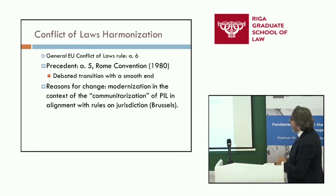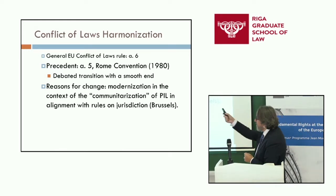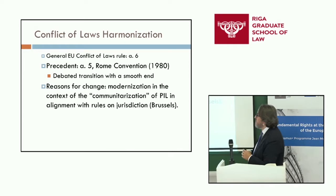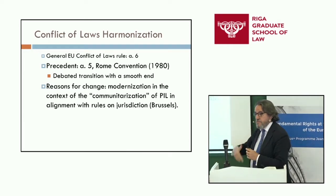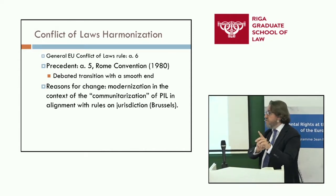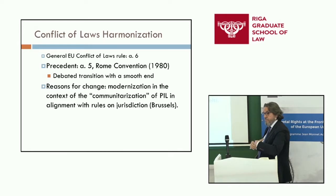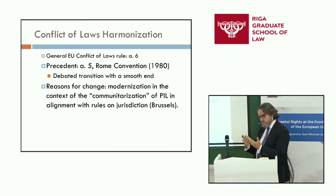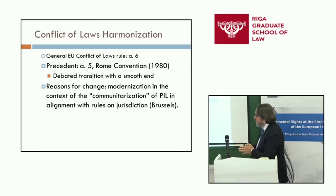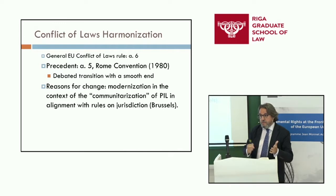Article 6 has a precedent in Article 5 of the Rome Convention. So since 1980 up to now, we have been dealing with the issue of how to protect consumers from the perspective of applicable law. The transition between the Rome Convention and the Rome Regulation has been smooth in the end. There was a proposal to make the article more protective for consumers, but when you compare Article 5 of the Convention with Article 6 of the Regulation, the differences are not that big.